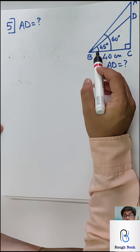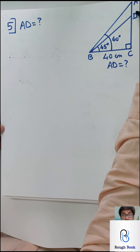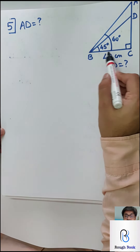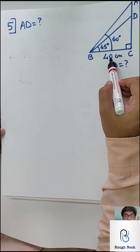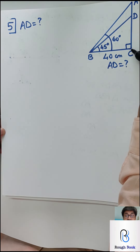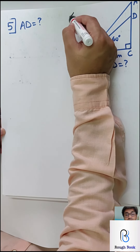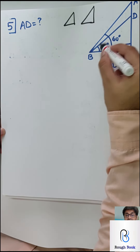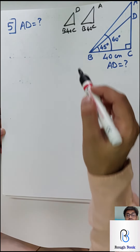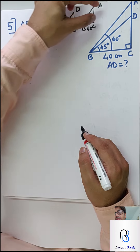Sum number 5. This is 45 degrees for the smaller angle, 60 degrees for the bigger, and the base is 40 centimeters. Your target is to find AD. Split into two triangles: DBC with angle 45 to get DC, and ABC with angle 60 to get AC. Then AC minus DC gives AD. In triangle DBC: tan 45 equals DC upon BC. Tan 45 is 1, BC is 40, so DC equals 40 centimeters. In triangle ABC: tan 60 equals AC upon BC, giving AC equals 40 root 3.